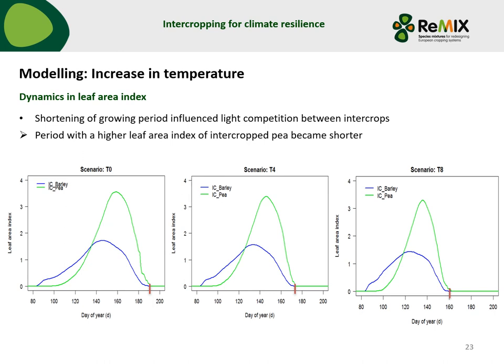To explain this simulated response for an increase in temperature, I looked into the dynamics — simulations during the season averaged per day across the 20 years. The growing periods were shortened with an increase in temperature. At the baseline scenario, harvest was around day 190; with a 4-degree increase it was around day 175; and with 8 degrees the harvest date was on day 160. This did not result in a difference between the intercrops, but this period where pea has a higher LAI than barley was shortened with higher temperature, making barley more competitive for light interception. This explains why the partial LER of pea decreased with the increase in temperature.